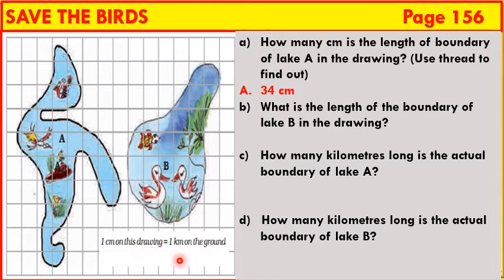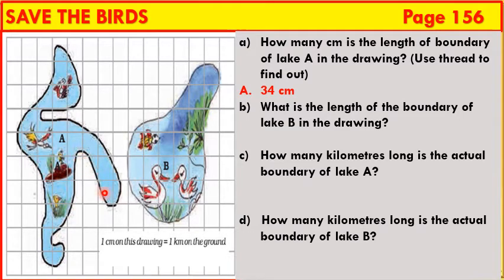Exercise A: How many centimeters is the length of the boundary of Lake A in the given drawing? The boundary of Lake A doesn't have straight lines, so we cannot measure it with a scale. One good idea is to take a thread and put it on the boundaries of Lake A, then measure the length of this thread using a scale. By using thread, we get the length of the boundary of Lake A as 34 centimeters.